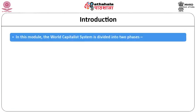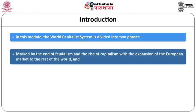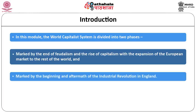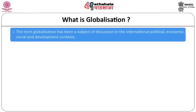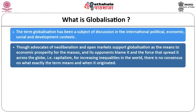Finally, the module will look at Immanuel Wallerstein's description of the beginning of the modern world system in Europe in the Middle Ages around the 16th century. The world capitalist system is divided into two phases: the end of feudalism and the rise of capitalism with European market expansion, and the beginning and aftermath of the Industrial Revolution in England.